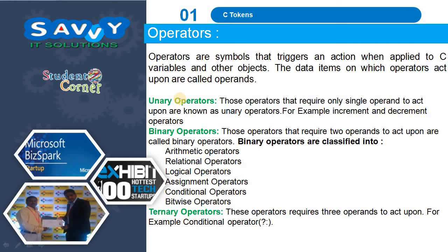Operators are symbols that trigger an action when applied to C variables and other objects. The data items on which operators act are called operands. Operators are generally classified into three categories based on the number of operands. Unary operators require only a single operand, for example increment and decrement operators. Binary operators require two operands and include arithmetic, relational, logical, assignment, conditional and bitwise operators. Ternary operators require three operands, for example the conditional operator.